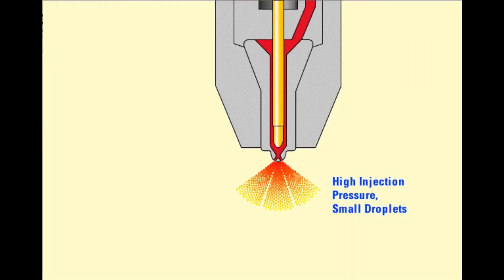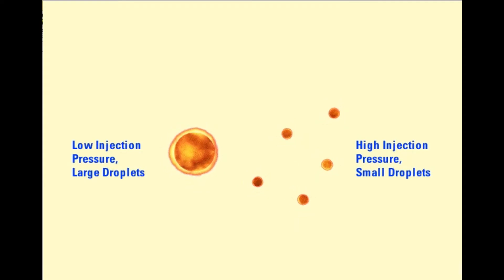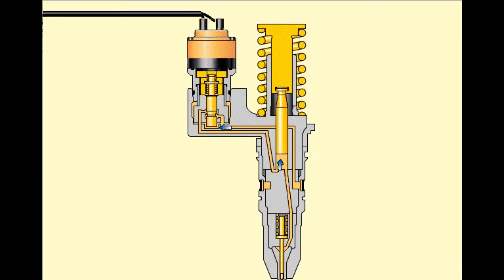High injection pressures promote complete combustion and lower exhaust emissions. Pushing the fuel through the orifice holes in the nozzle tip causes the fuel to atomize into droplets in the combustion chamber. Fuel droplets burn from the outside into the center. Large droplets take longer to burn and may not have time to burn completely during a normal combustion cycle. Increasing the pressure of the fuel through the orifice holes creates smaller droplets. In turn, smaller droplets burn more completely.